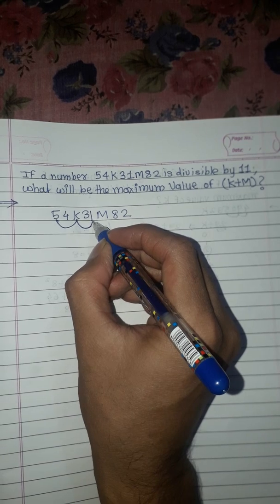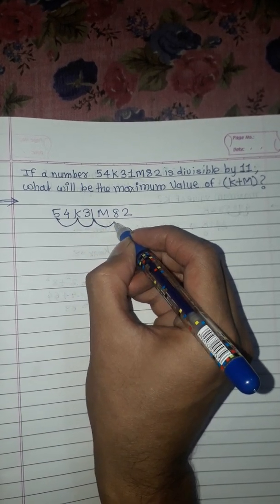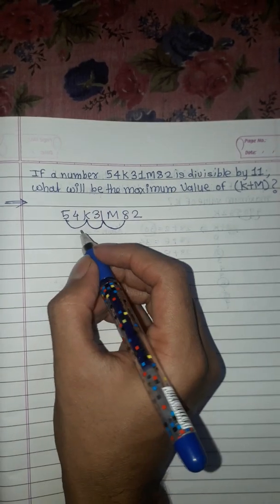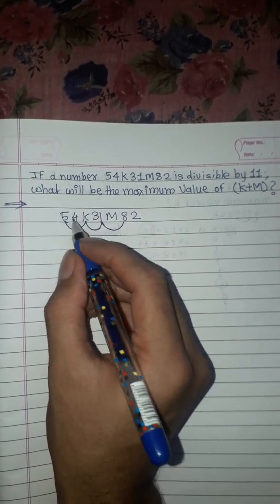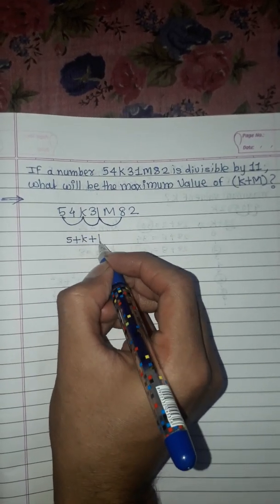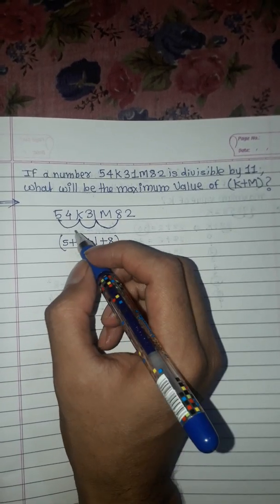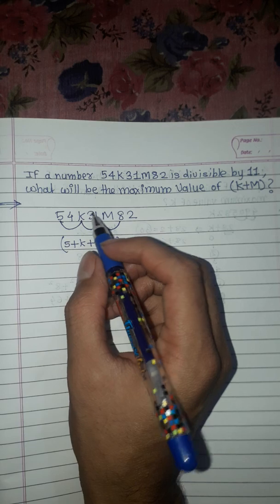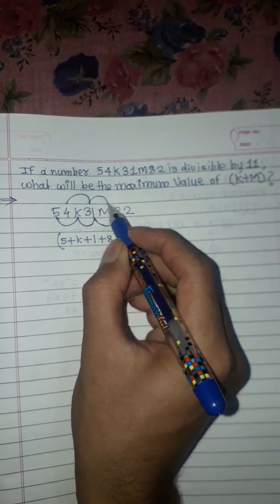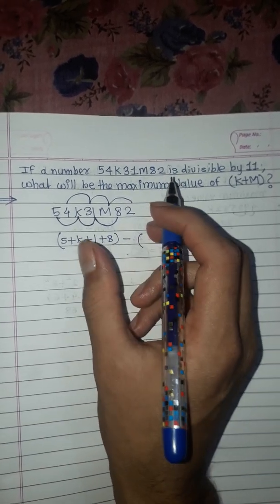Here, 5 + k + 1 + 8 is the sum of digits at odd places, and 4 + 3 + m + 2 is the sum of digits at even places. The difference must equal 0 or a multiple of 11.